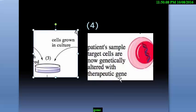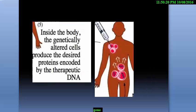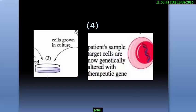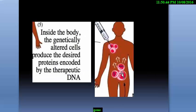Then what we have to do now — we will insert this gene back into our body. Inside the body, the genetically altered cells produce the desired protein encoded by the therapeutic gene. That means we have found a therapeutic gene that has altered the disease gene, so this is totally perfect. When we enter this gene into our body, it will alter the disease cells.